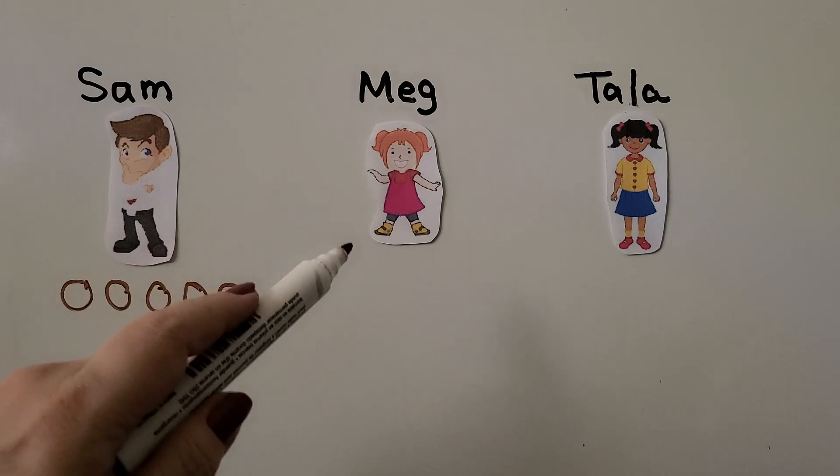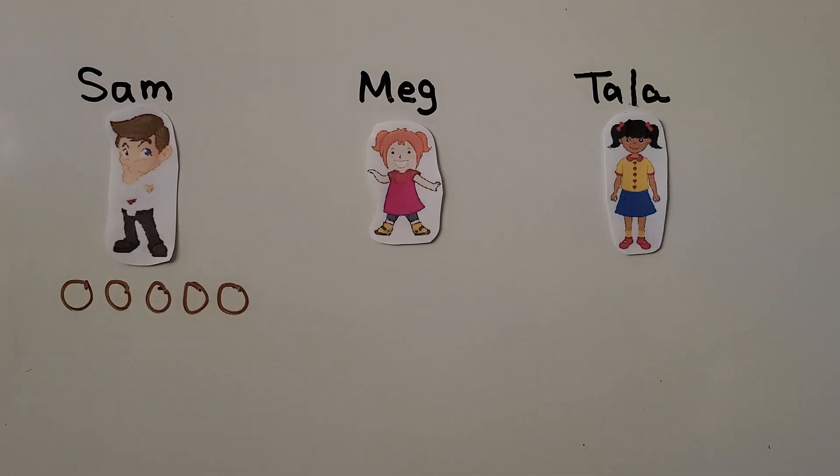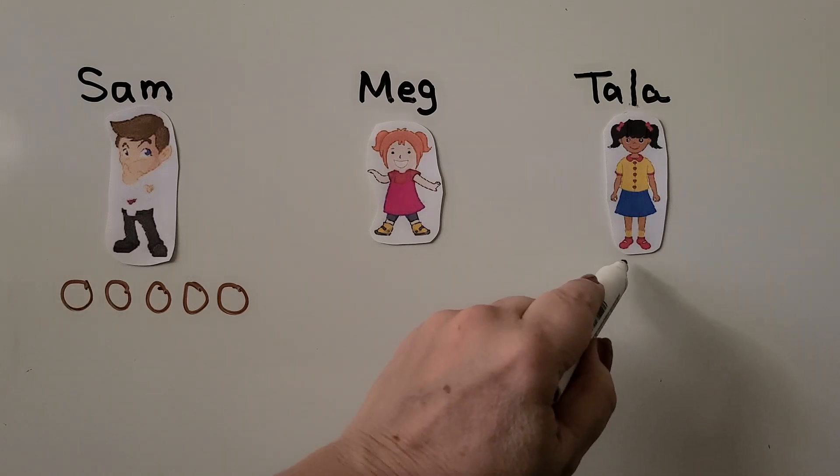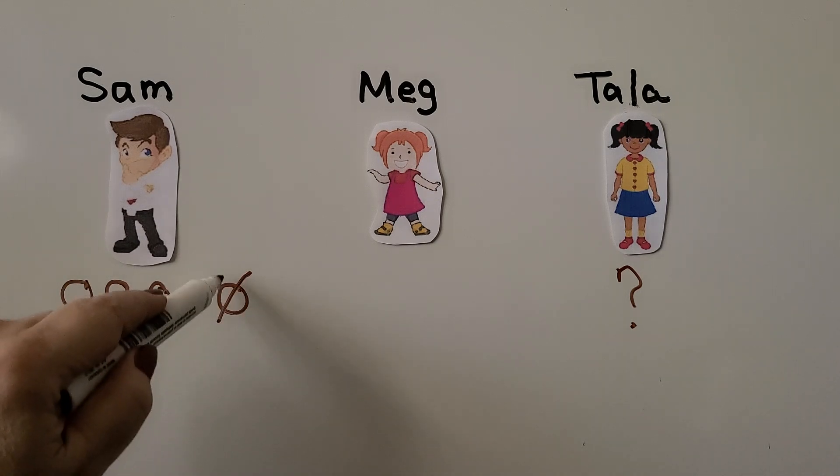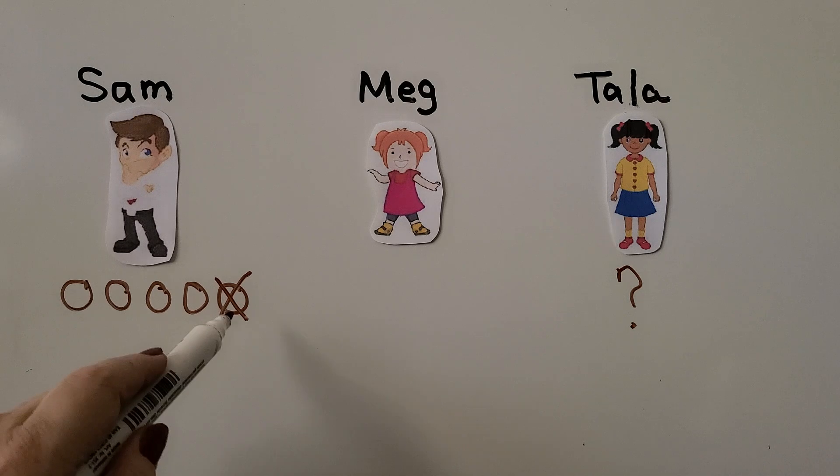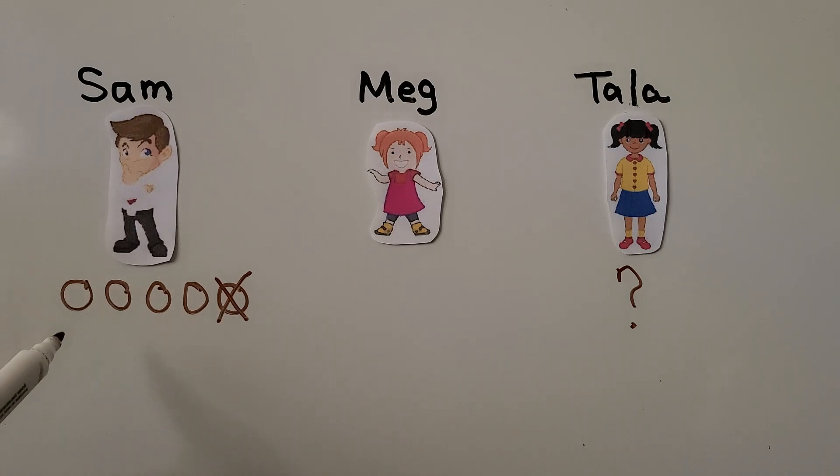So is Meg's number important? Meg's number is extra information we don't need. We need Sam's number, and then to find Tala's number, we need to take Sam's number and find 1 less. So if we take away one of the counters, we'll know Tala's number.